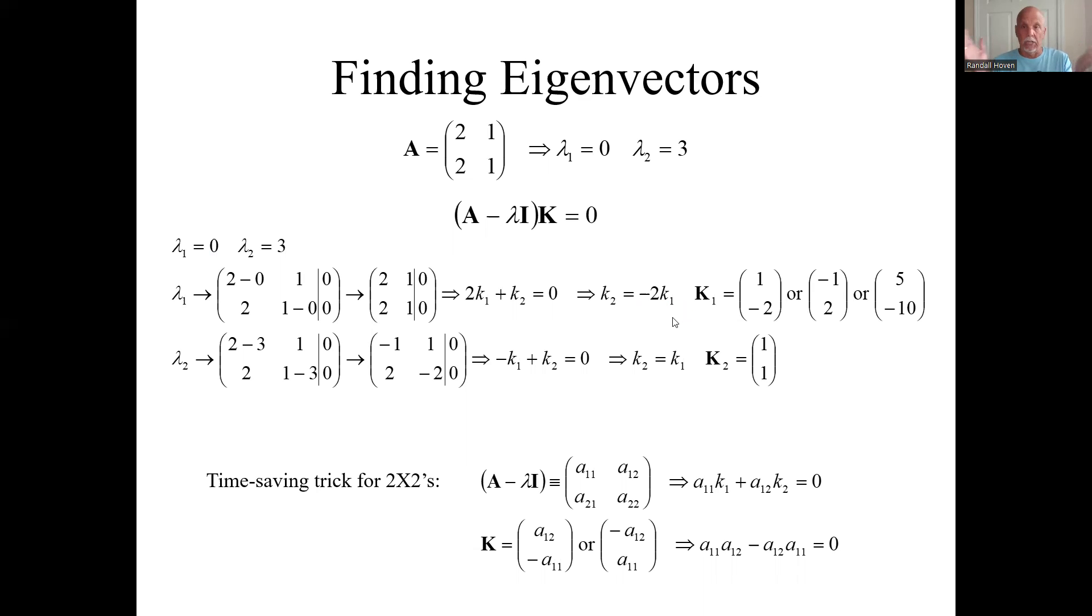Remember, it's not unique. So I get an infinite number of answers. Here's one. I'll say k1 is one and k2 is minus two.